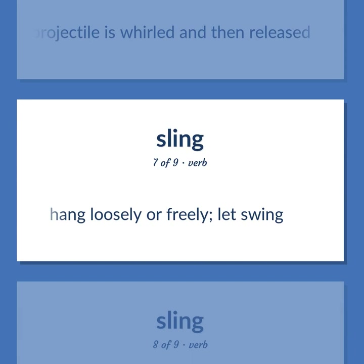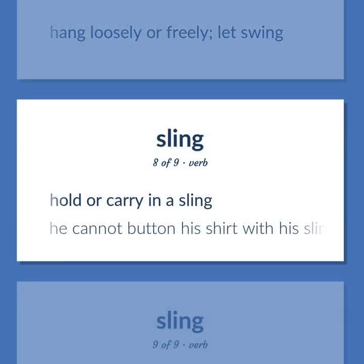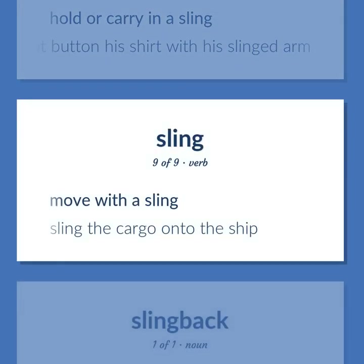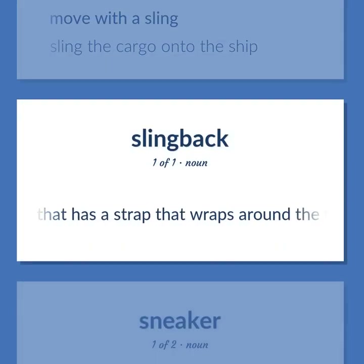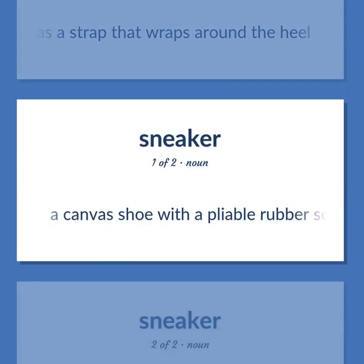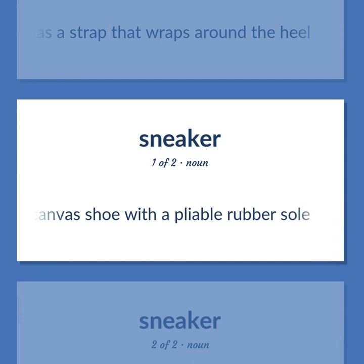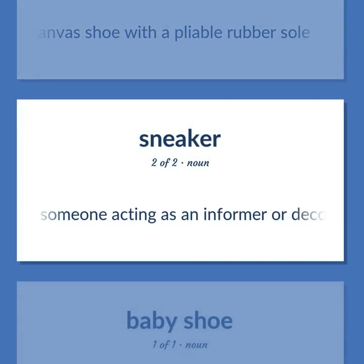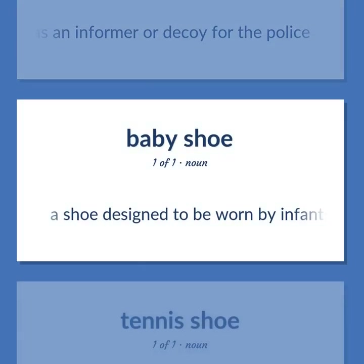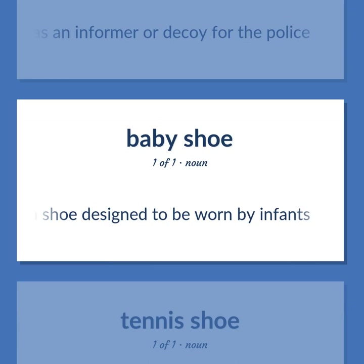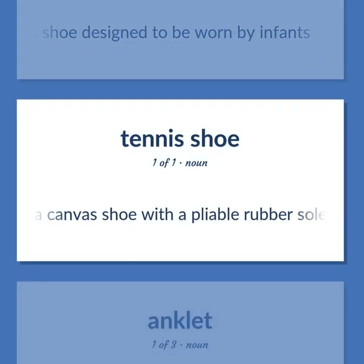Sling: A simple weapon consisting of a looped strap in which a projectile is whirled and then released. Hang loosely or freely; let swing. Hold or carry in a sling — he cannot button his shirt with his slinged arm. Move with a sling — sling the cargo onto the ship. A shoe that has a strap that wraps around the heel. A canvas shoe with a pliable rubber sole. Someone acting as an informer or decoy for the police. A shoe designed to be worn by infants.